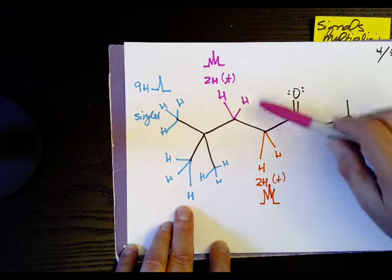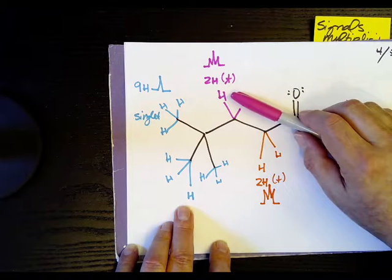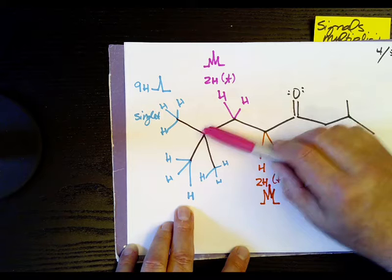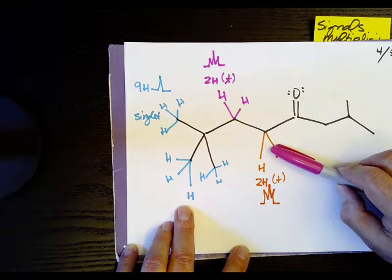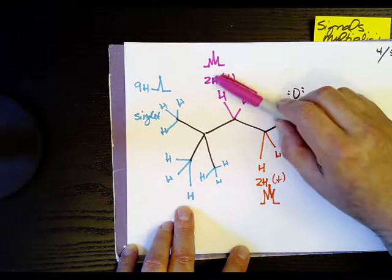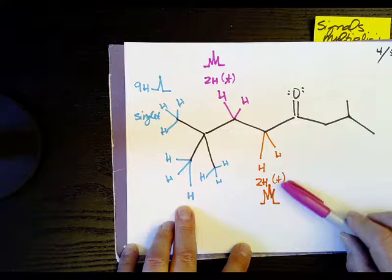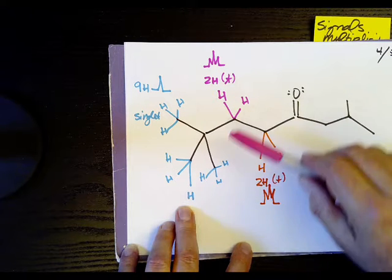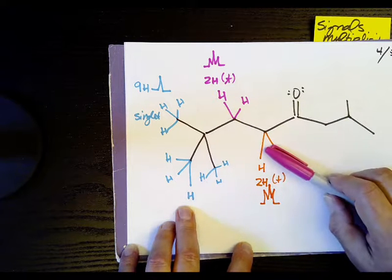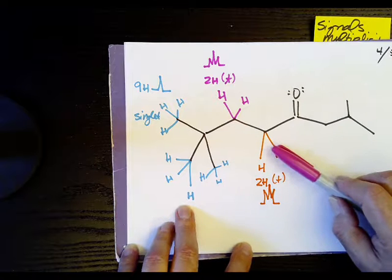So if I go to this purple one, there is no protons or hydrogen on the left side, but there is two on the right side. So this becomes a triplet. So these two hydrogen become a triplet, very similar to this. They are different, right? And at this point, we're not doing anything with ppm. That would be the next exercise to assign ppm to them.